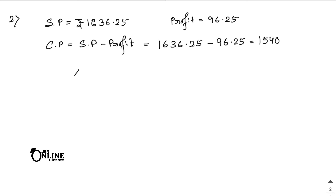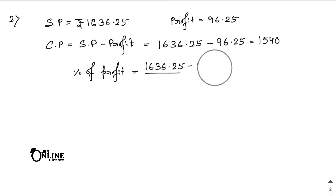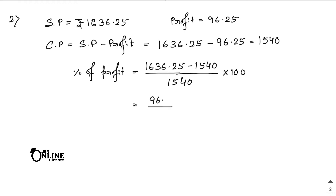Now find the gain percentage or percentage of profit. The formula is SP minus CP divided by CP, into 100. Since SP minus CP equals profit, you can directly write the profit: 96.25 divided by 1540, into 100. The zeros cancel out, giving 96.25 divided by 154 into 10, which equals 6.25%.